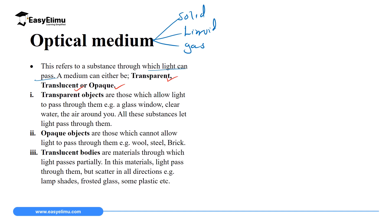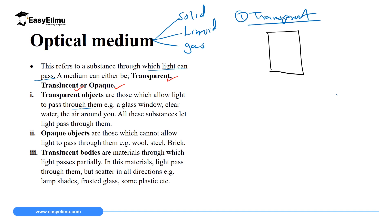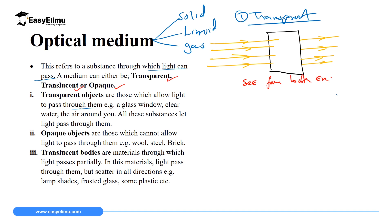For transparent optical medium, these are materials which allow light to pass through them, and one can see through them. If you have a transparent material and you allow four rays of light to pass through it, the four rays will emerge on the other end. It allows all the light which enters to pass through, and you can see from both ends.